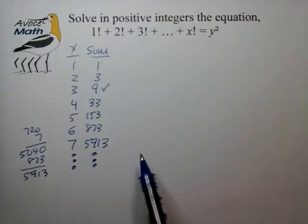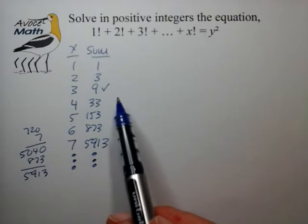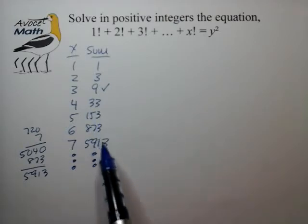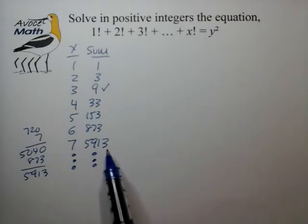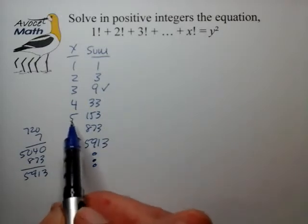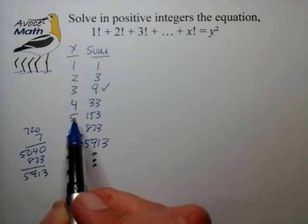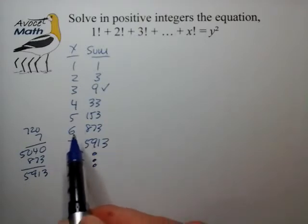So the first thing I notice is that we've identified 1 square but from a certain point on it appears as though the units digit in this sequence is always 3 and I can kind of see why that is, because once you get to 5 factorial, every factorial thereafter will always have a 0 on it.